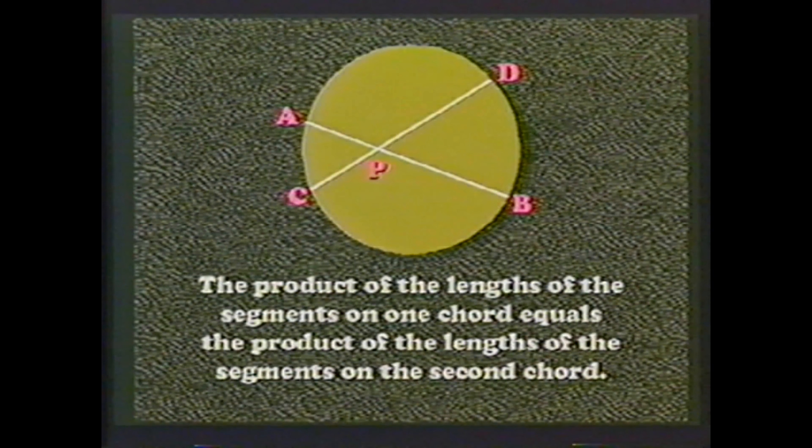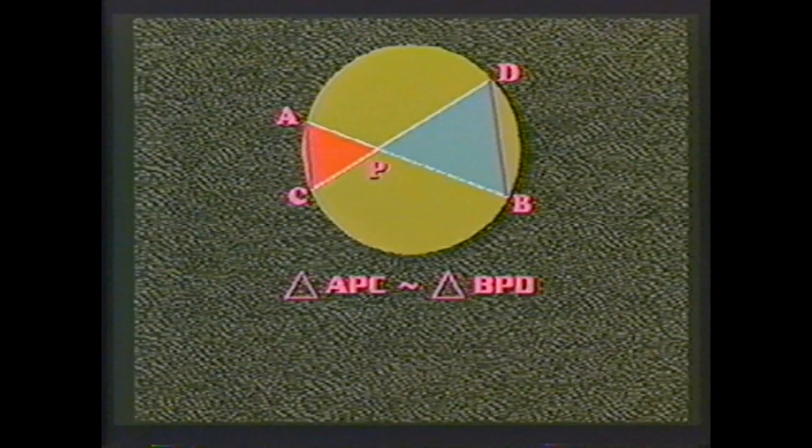Another fact about tangents: two tangents drawn to a circle from a point outside the circle are equal. In this figure, AQ and BQ must be equal. The quadrilateral OAQB has AQ equal to BQ, and OA equals OB since both are radii — this quadrilateral is in the shape of a kite. In summary: a line is tangent to a circle if and only if it is perpendicular to the radius at the point of tangency, and tangent segments from the same exterior point are equal.